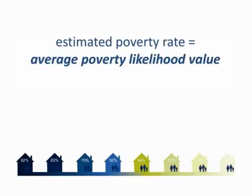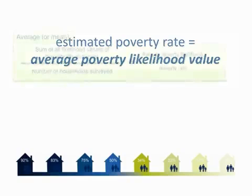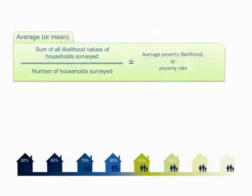Now, let's discuss how you calculate the rate of poverty in a group of households using one poverty line. Simply put, find the average or mean of the poverty likelihood values of all households surveyed. Remember, to find the average or mean, you add all values and divide the sum by the number of values.